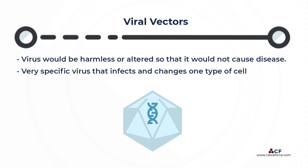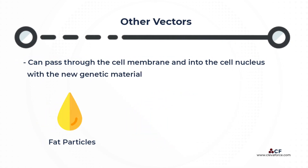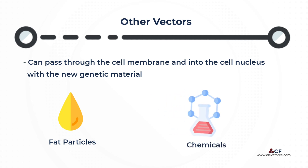Viral vectors have to be very specific — for example, a virus that infects and changes only heart cells without infecting and changing all other cells in the body. Fat particles and chemicals have also been used as vectors because they can carry the new genetic material through the cell membrane and into the nucleus.